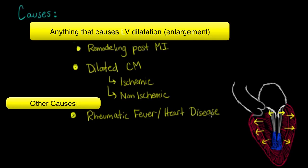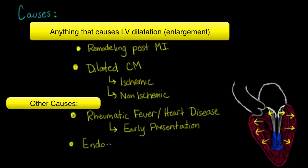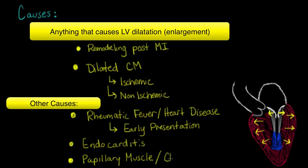Remember that the later lesion of rheumatic fever is mitral stenosis, which occurs after multiple bouts of rheumatic fever. Another cause is endocarditis — an infection of the valves leading to a vegetation, something that builds up on the valve and doesn't allow it to close effectively. Another cause would be papillary muscle dysfunction or rupture.